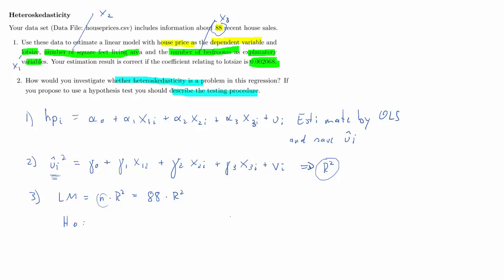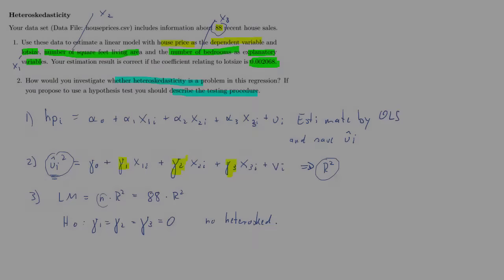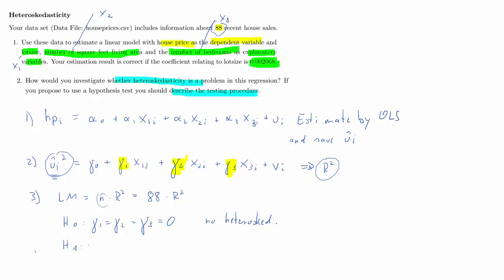The null hypothesis of no heteroscedasticity is that all three coefficients in the auxiliary regression — gamma 1, gamma 2, and gamma 3 — are equal to zero, indicating that none of the right-hand-side variables can explain variation in the dependent variable, which is our proxy for error variance. The alternative is that any gamma_i is not equal to zero for i = 1, 2, or 3, which would indicate heteroscedasticity.